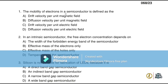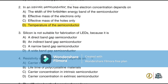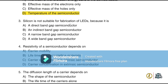Question 1: The mobility of electrons in a semiconductor is defined as drift velocity per electric field. Question 2: In an intrinsic semiconductor, the free electron concentration depends on temperature. Silicon is not suitable for fabrication of LEDs because it is an indirect band gap semiconductor; a direct band gap semiconductor is required for LED fabrication.